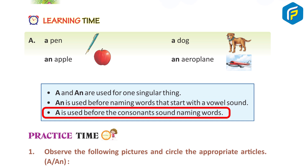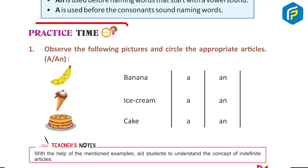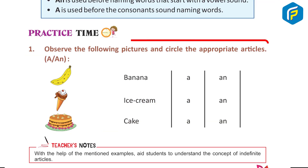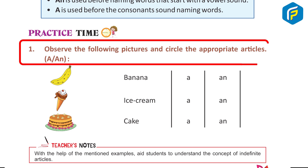'A' is used before naming words that begin with a consonant sound. Practice Time One: Observe the following pictures and circle the appropriate articles — 'a' or 'an'.